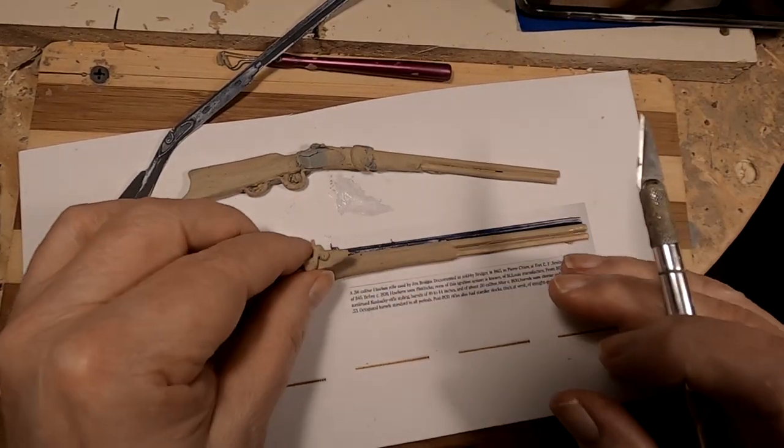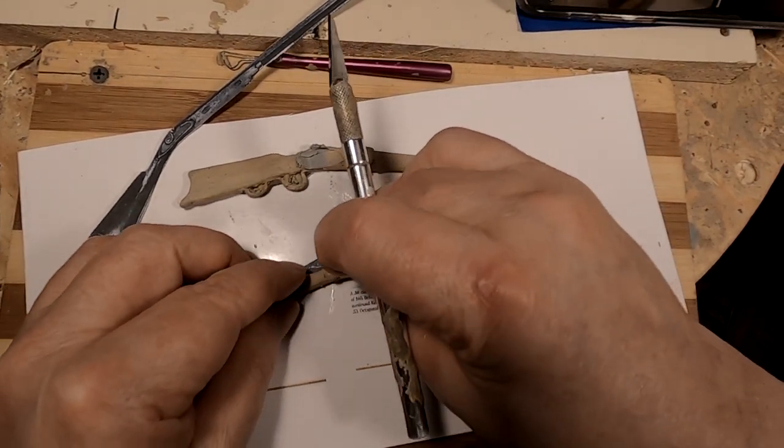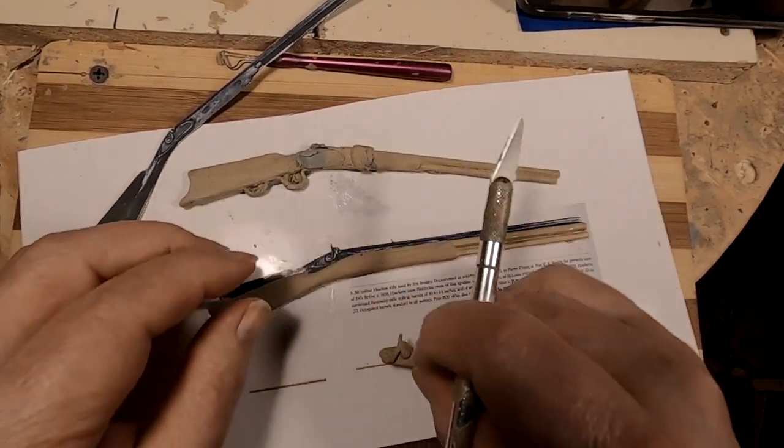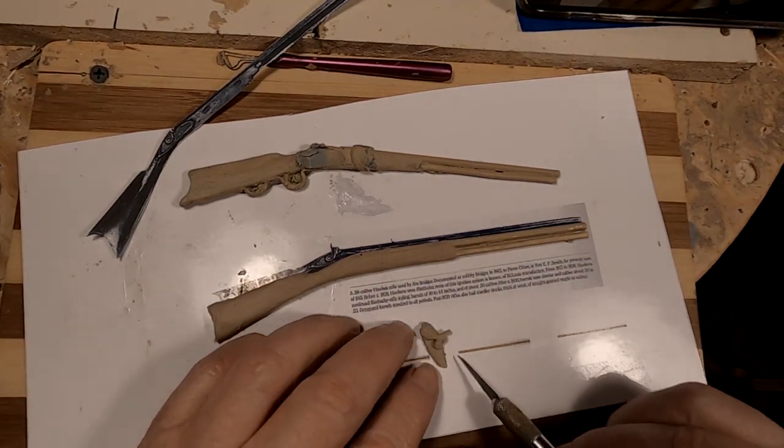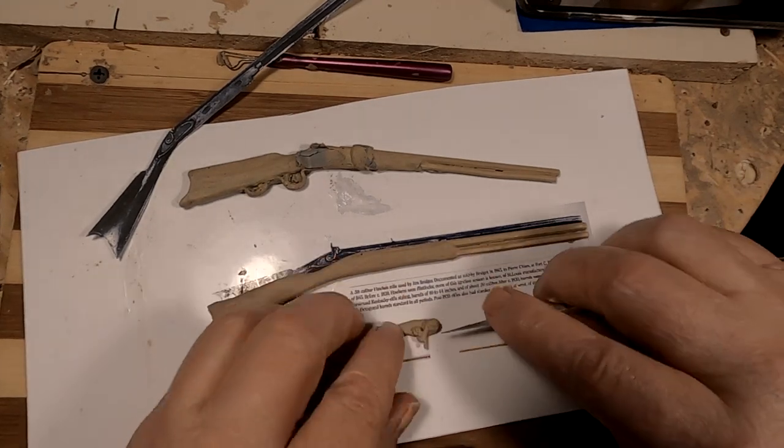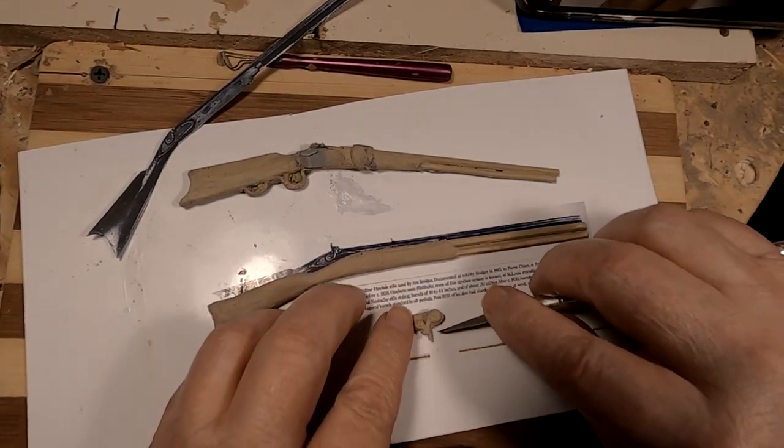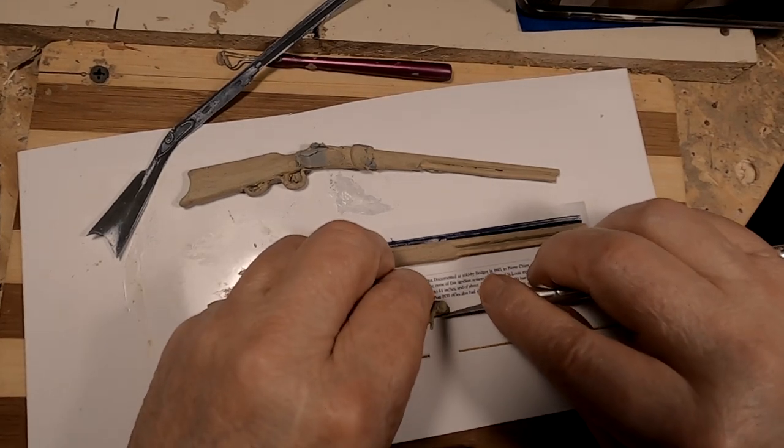Rather than go through the whole process of doing this hammer and nipple thing, I'm going to just use what I had on the other rifle. I just cut it off the other rifle. I got to do some trimming up here.